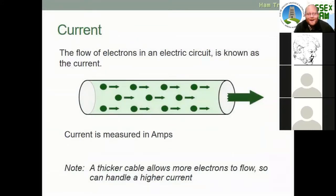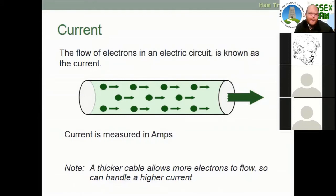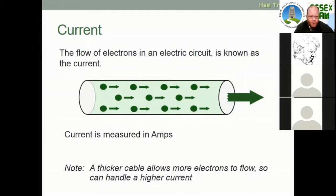Moving on to current — imagine an electrical wire made of conductive material through which electrons flow. Think of it like a water pipe: the larger the pipe, the more water can flow. Similarly, the thicker the electrical cable the more electrons can flow through it, handling a higher current than a smaller gauge wire. Remember, current is always measured in amps.